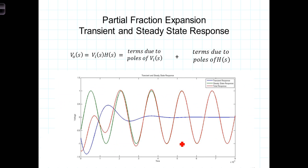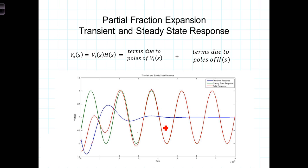Let's look at this now in the time domain. We have V_out equals V_in times H. There were poles due to the input and poles due to the transfer function. The poles due to the transfer function died out — we're seeing that here in the transient. The blue curve is the term associated with the poles of H(S). The green term is the sinusoidal steady state, due to the poles of the input. The red is the total response, which is the sum of the sinusoidal steady state plus the transient. As the transient dies out, the total response approaches the sinusoidal steady state.